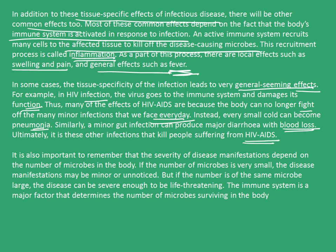It is also important to remember that the severity of disease manifestations depends on the number of microbes in the body. If the number of microbes is very small, the disease may be minor or unnoticed, but if the number is large, the disease can be severe enough to be life-threatening. The immune system is a major factor that determines the number of microbes that survive inside the body. In this video, we learned about infectious and non-infectious diseases, their modes of spread, the agents that cause them, and organ-specific and tissue-specific manifestations.